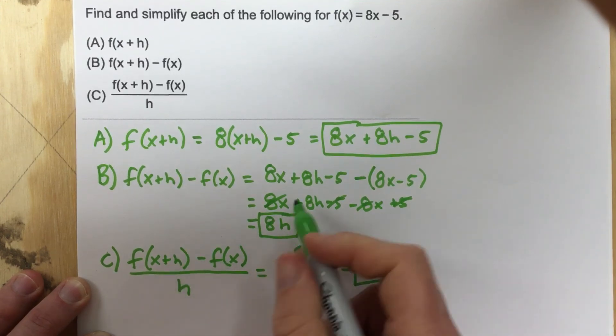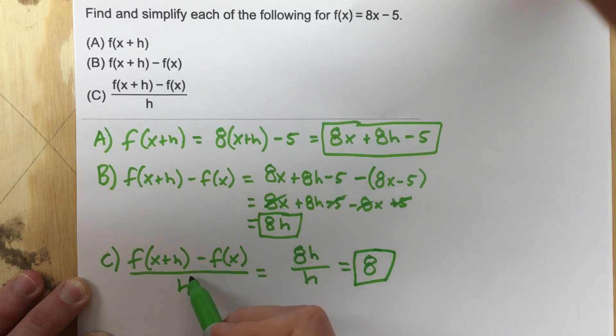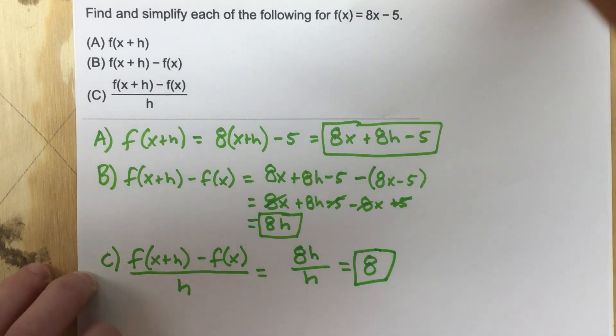So if you went through the whole process of simplifying the top, and then had that divided by h, the h's would cancel, you're left with 8. Hopefully that makes sense.